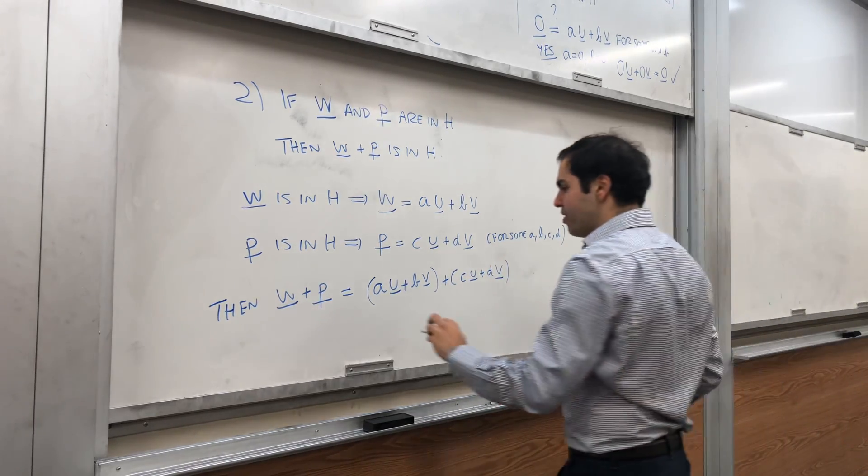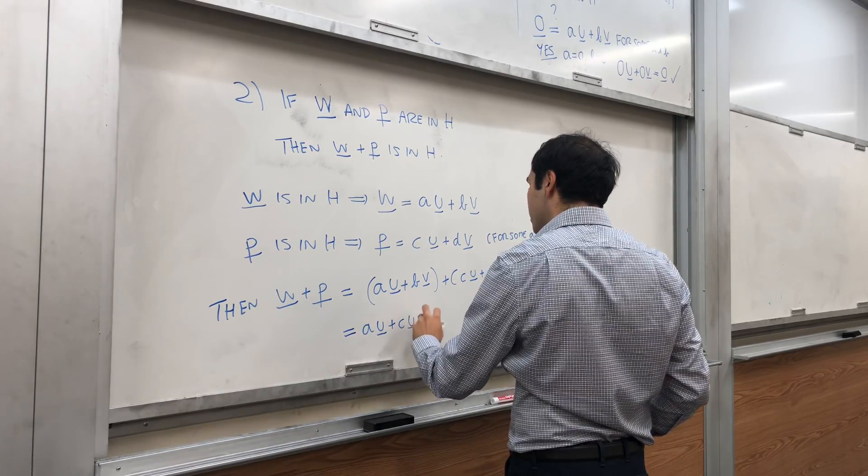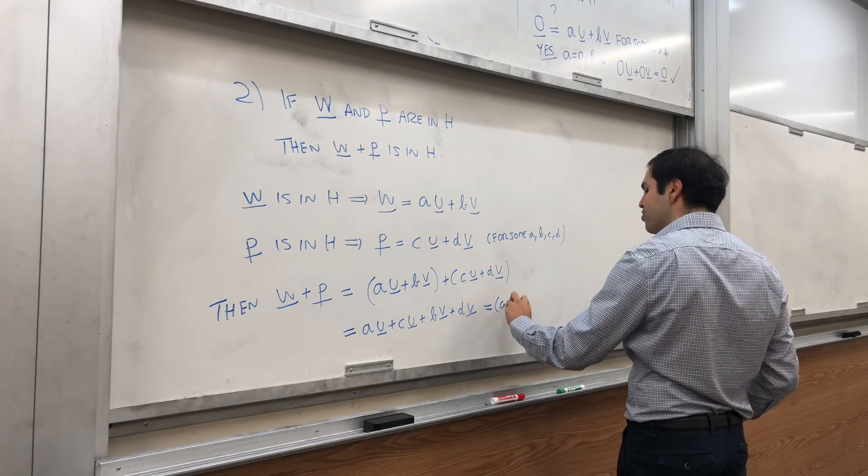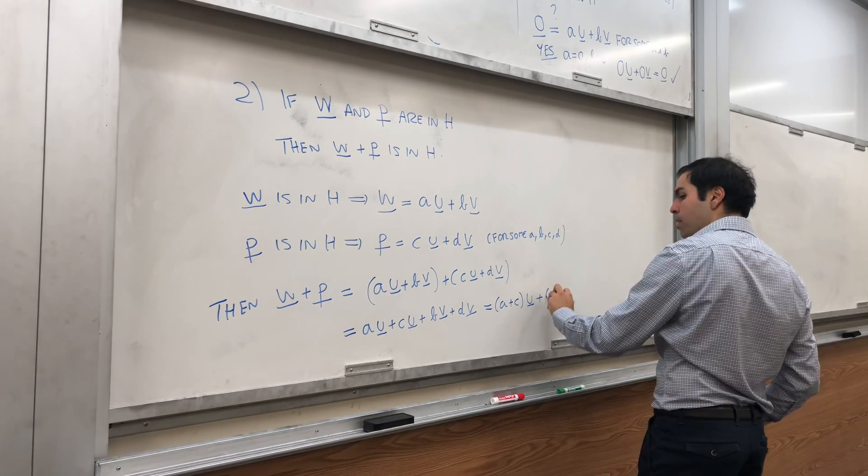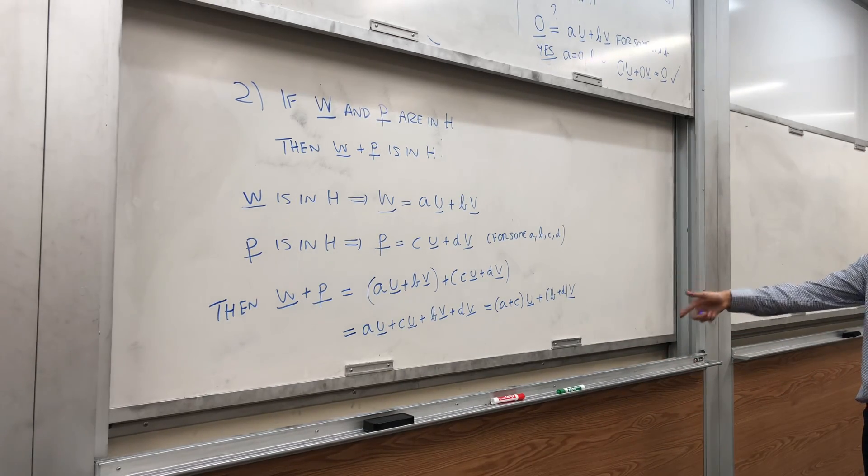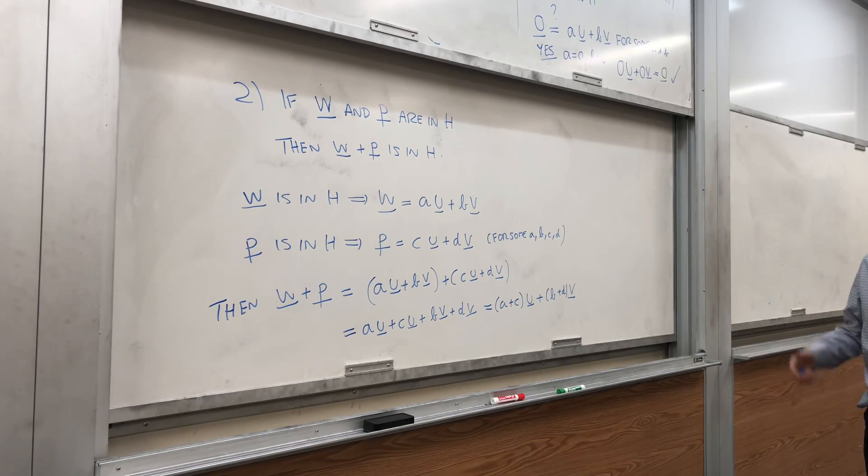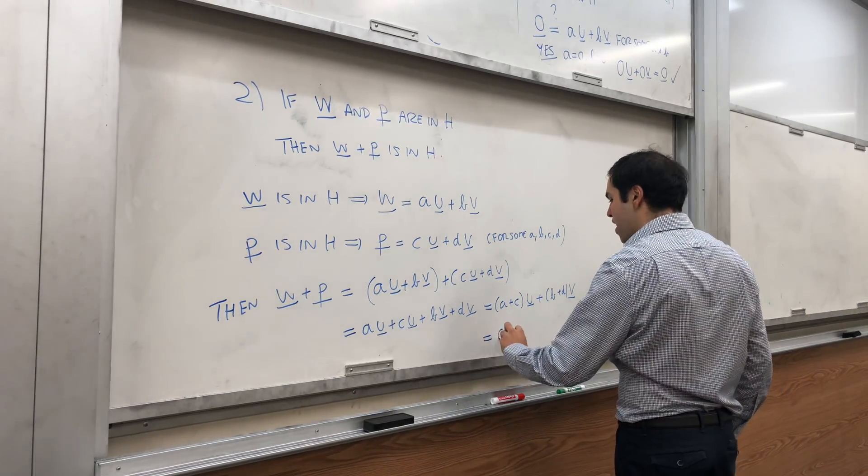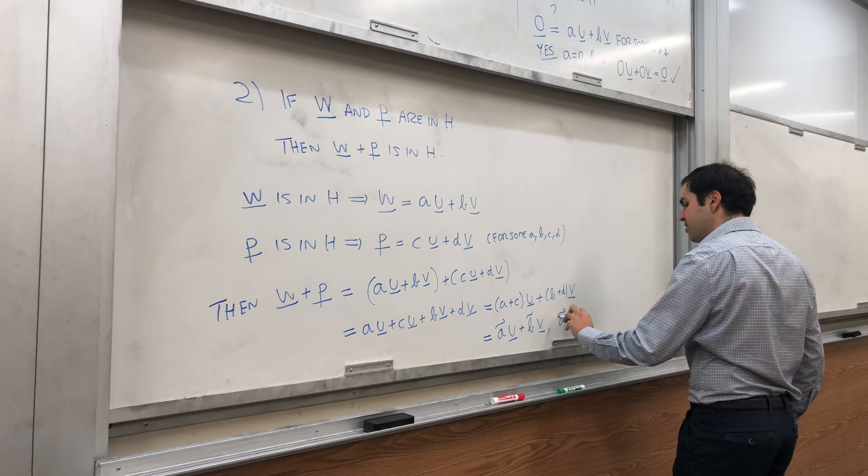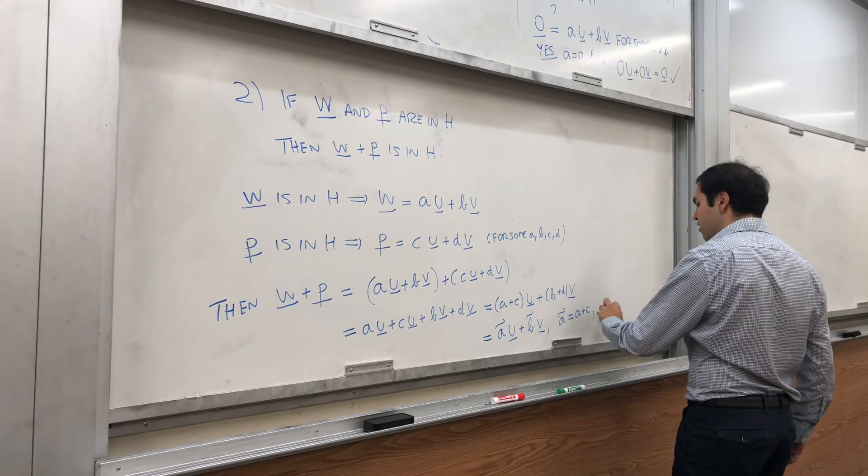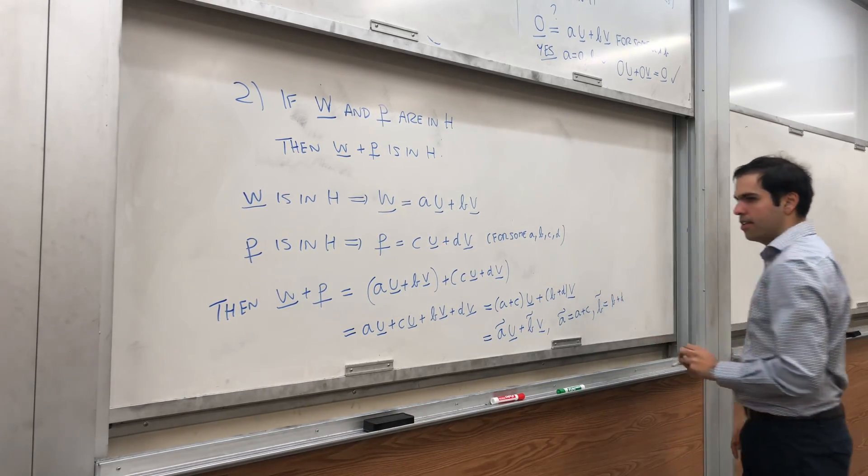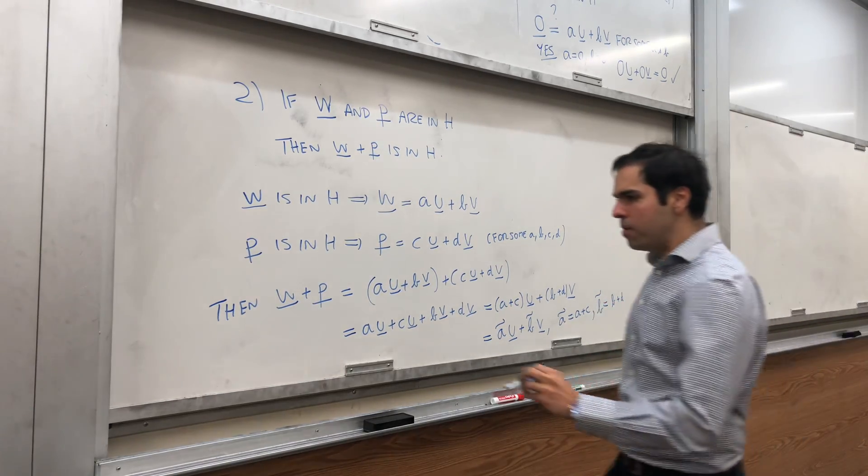Well, now we can just put the U's and V's together. So this is AU plus CU plus BV plus DV. And notice, this is precisely A plus CU plus B plus DV. And the question is, is this a linear combo of U and V? Yes, because this is of the form A squiggled U plus B squiggled V, where A squiggled equals to A plus C, and B squiggled is B plus D. So, indeed, W plus P is in H.